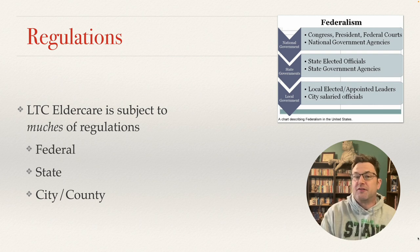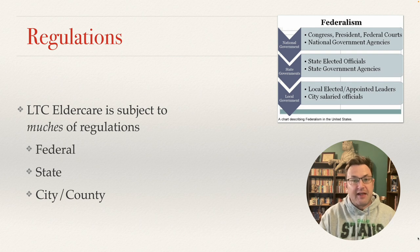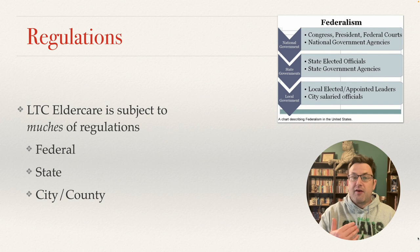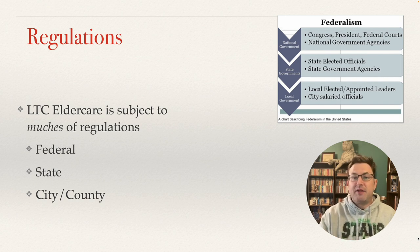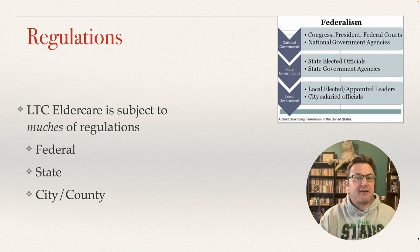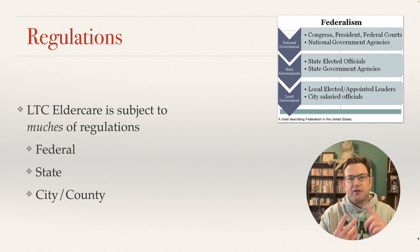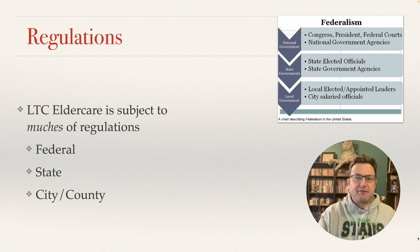Local ordinances can be more strict than the state standard but they can't be less strict. Within long-term care there is also a federal minimum standard, so the state can be more strict than the federal standard but cannot be less strict. So there are three levels: all nursing homes and long-term care centers are subject to federal, state, and local regulation.